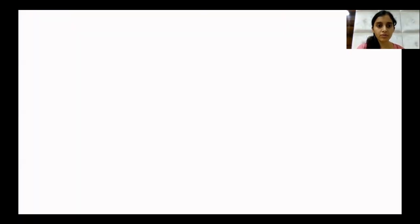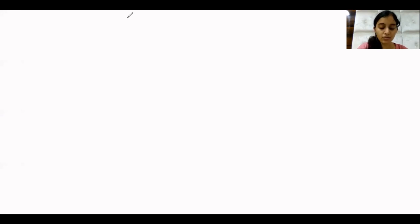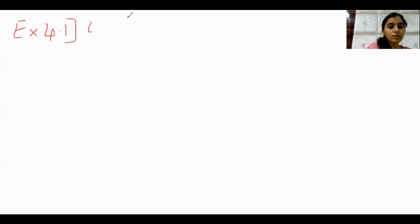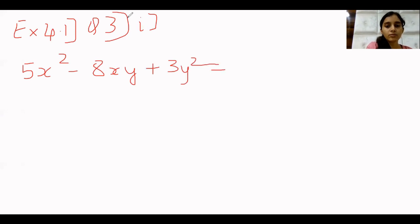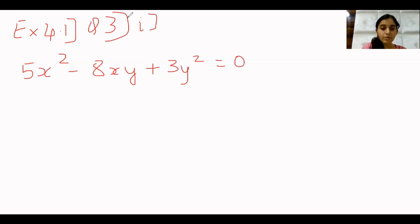The third question says: find the combined equation of the pairs of lines passing through the origin and perpendicular to the lines represented by the following equations. The first one is 5x² minus 8xy plus 3y² equal to 0. So it says find the combined equation of the pairs of lines passing through the origin and perpendicular to the lines represented by this combined equation.